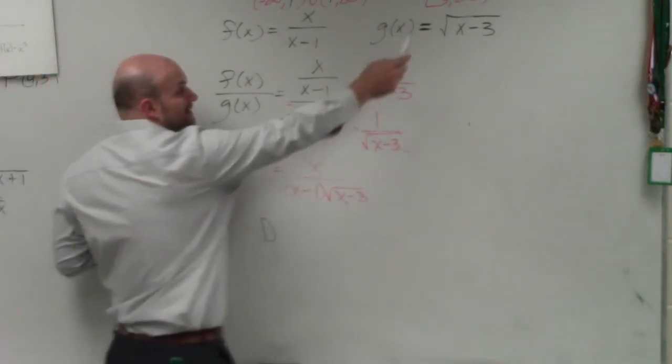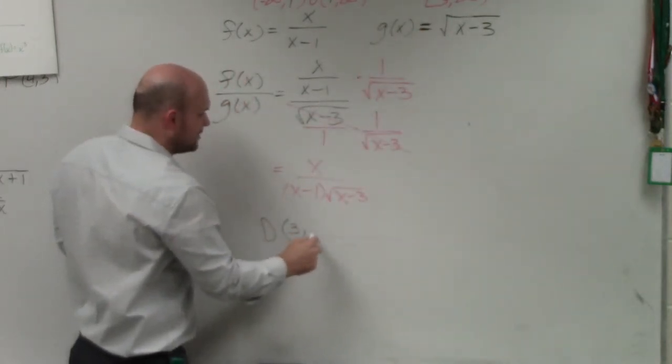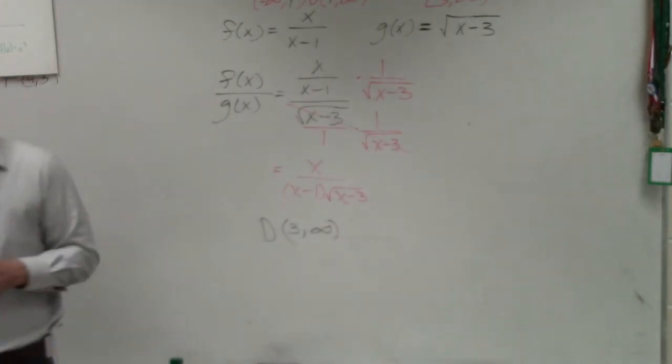So instead of doing, it's still 3 to infinity, but is 3 included now? No. So notice the difference that I have to use now. So if you have your radical in the denominator, the value cannot be included.